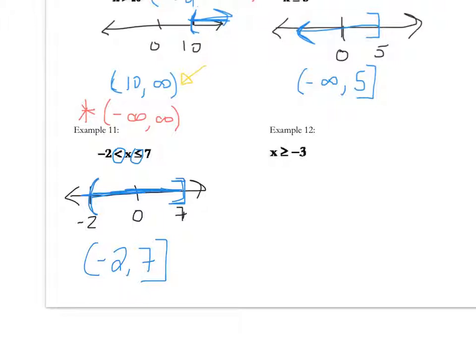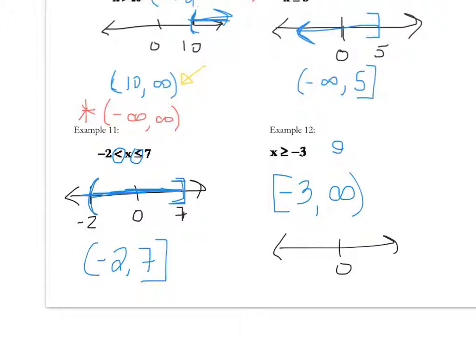Go ahead and try example 12 on your own, then share with your partner. We should have a closed bracket at negative three and go to positive infinity. So if I asked you for a number greater than or equal to negative three, you might say zero — and zero is to the right of negative three, so the arrow goes to the right.